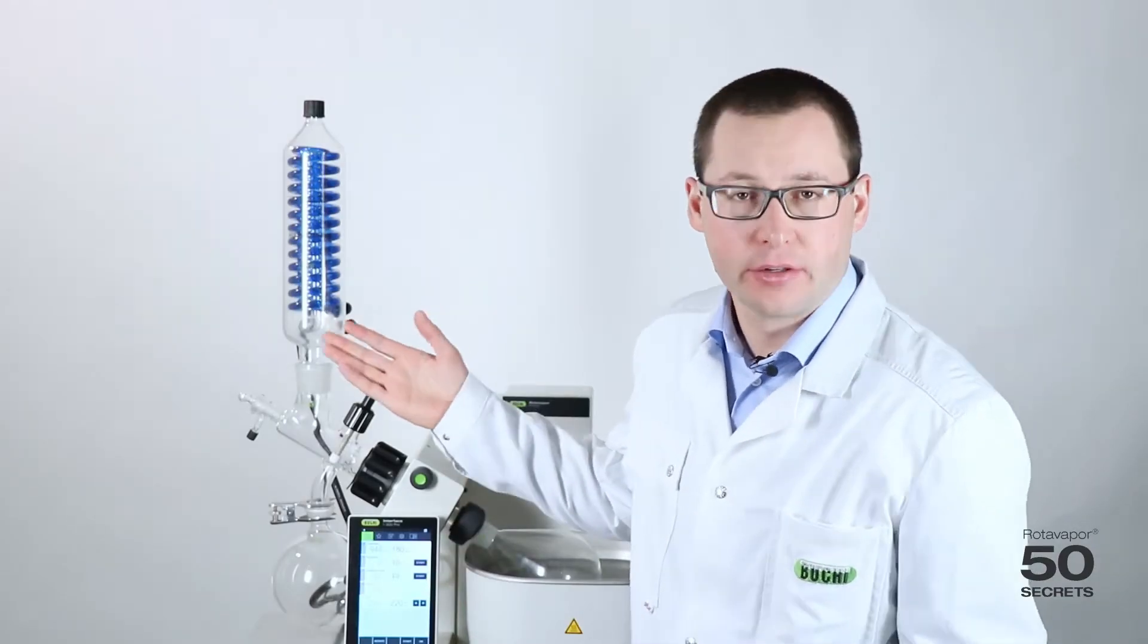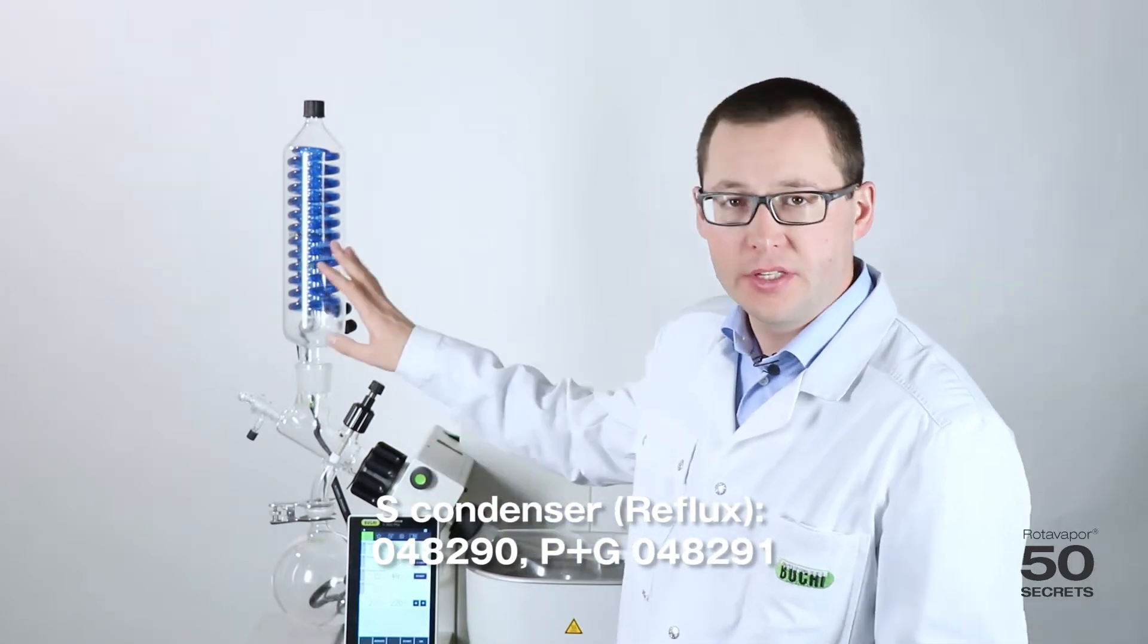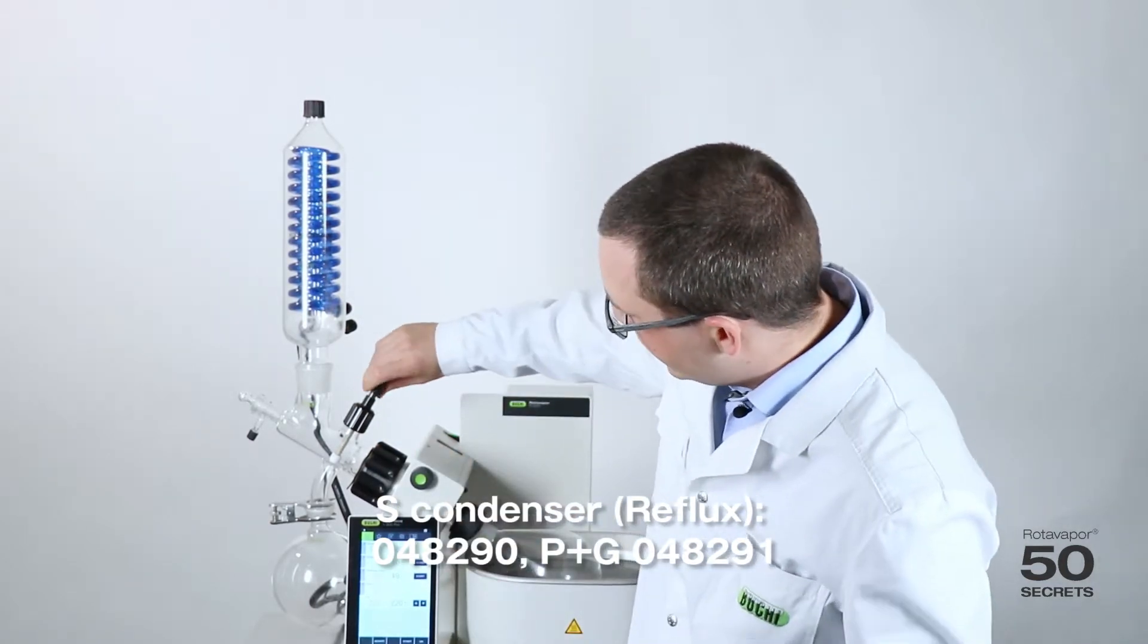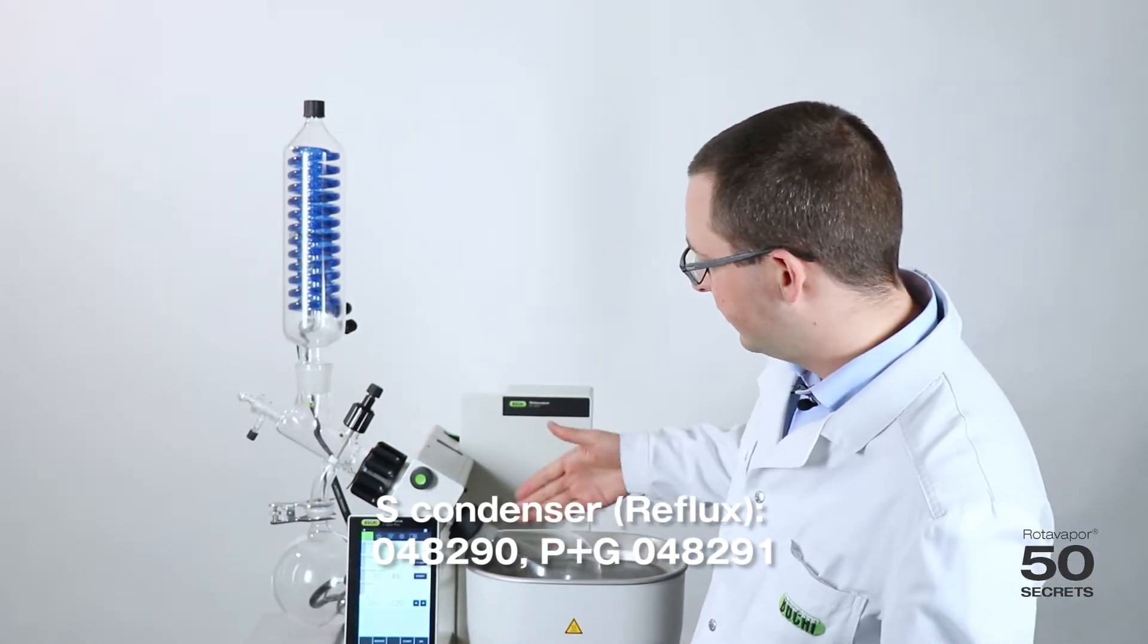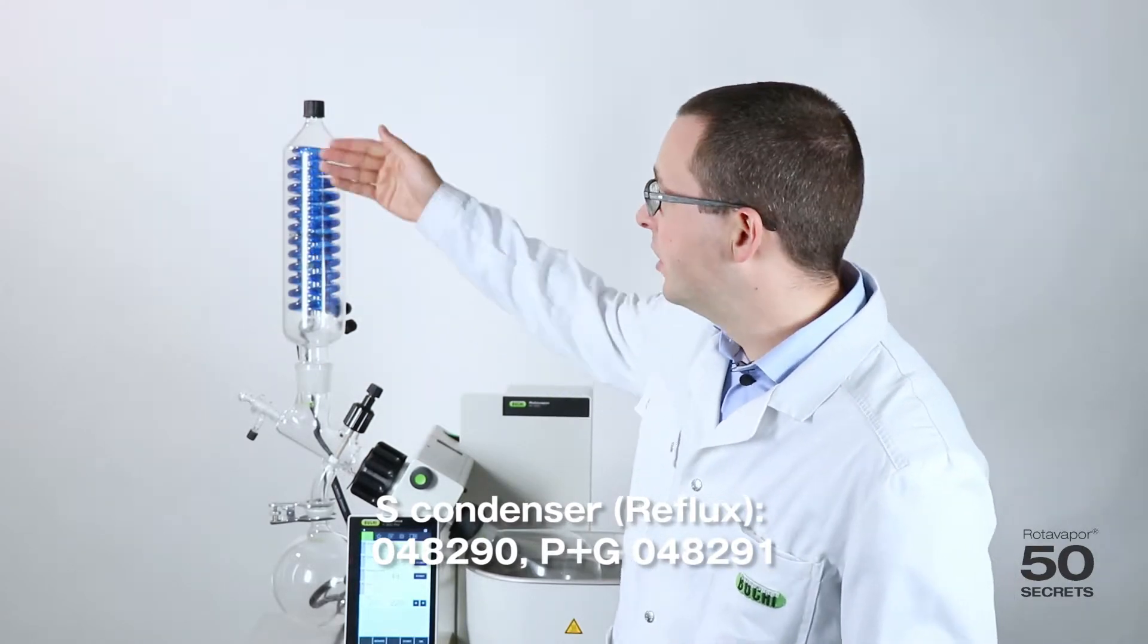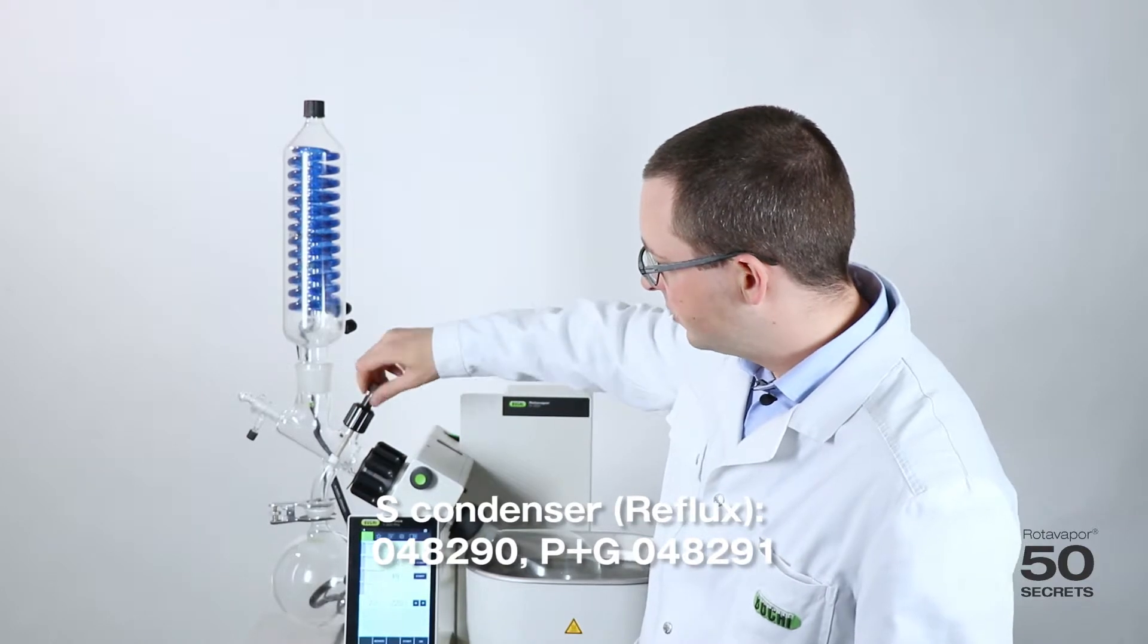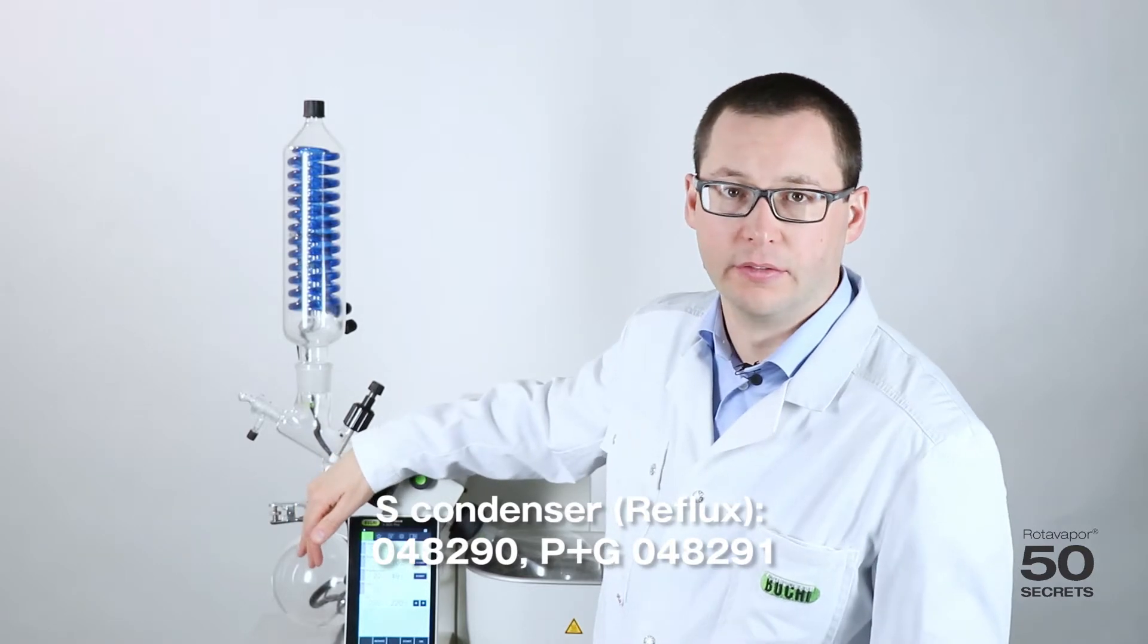This is the so-called S condenser, the reflux condenser. The big difference between this condenser and the V condenser is that there is a shutoff valve over here. I can close it in the beginning. I can start the evaporation. Vapor will flow through the vapor duct into the condensing area which is exactly the same like the V condenser, will flow down as a liquid will flow back into the flask. Once I open this shutoff valve it will flow the liquid will flow into the receiving vessel.